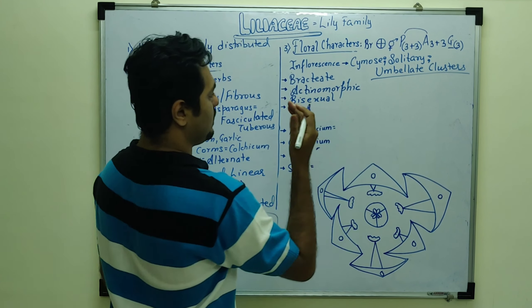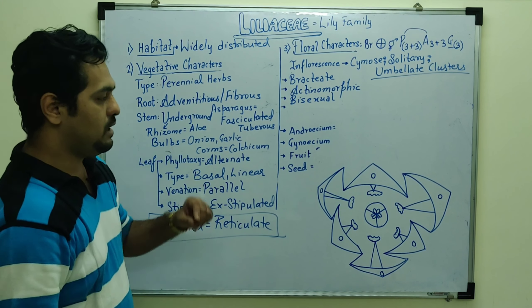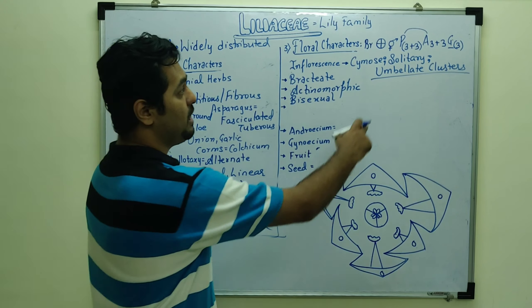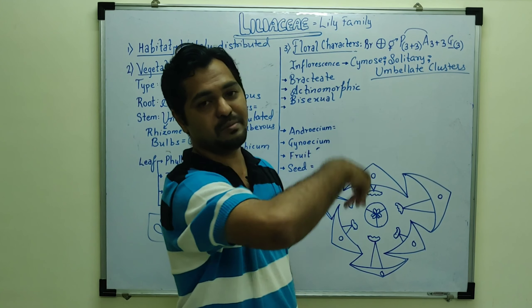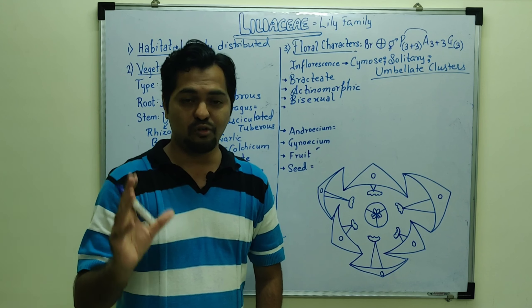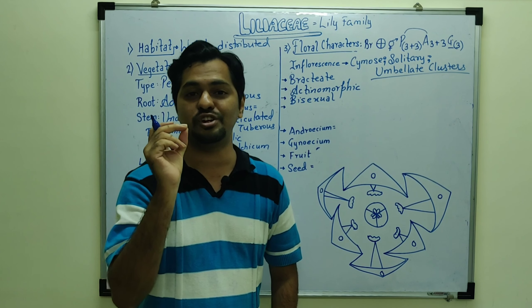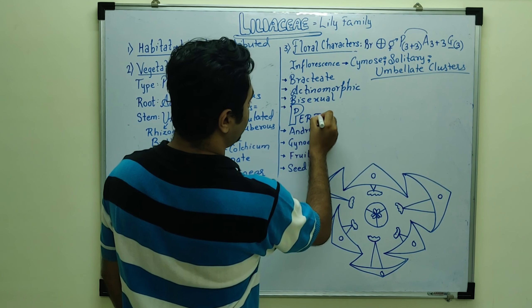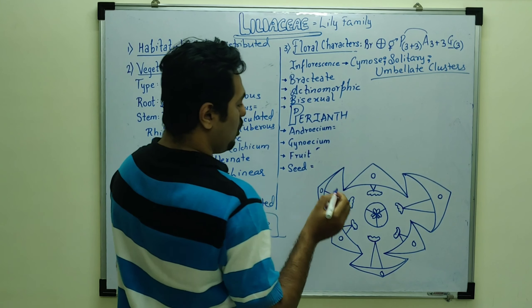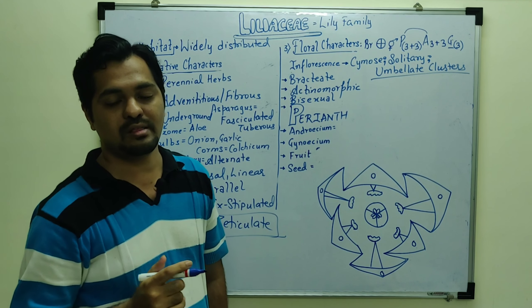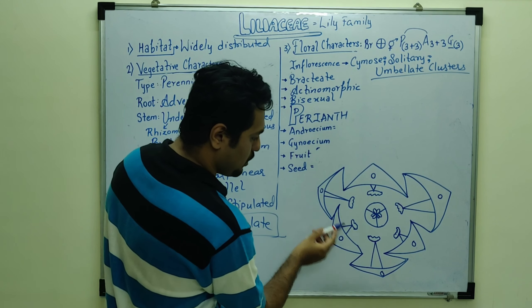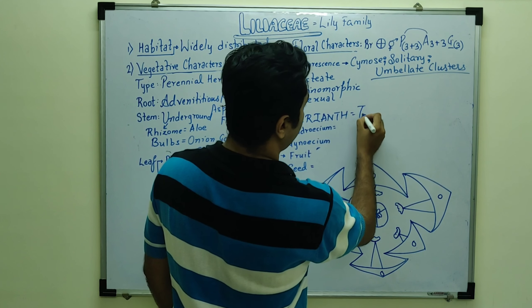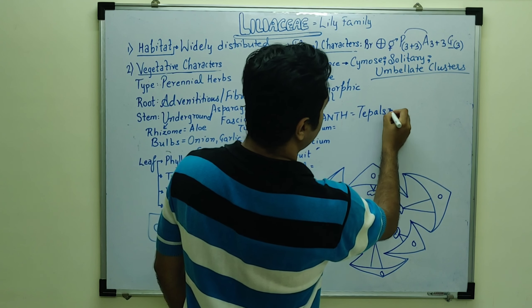This is all bisexual flowery. Then here we have no K mention or C mention. Calyx and corolla do not mention. In one of my videos I have discussed when we don't differentiate, they are morphologically similar as perianth. Here is perianth presence.